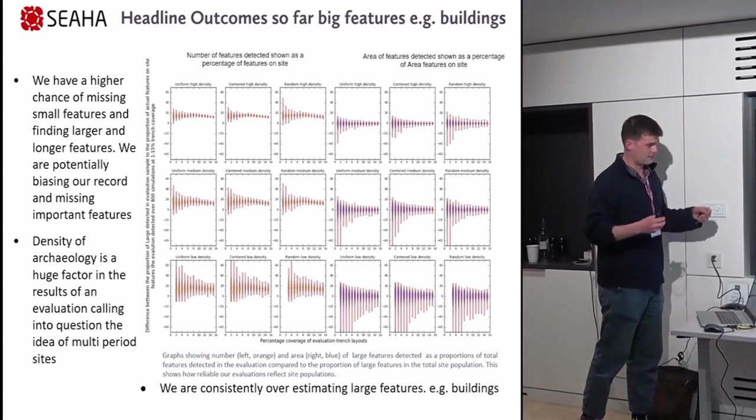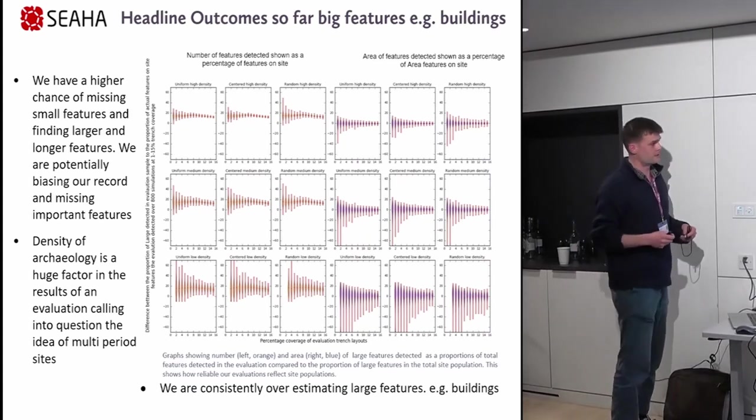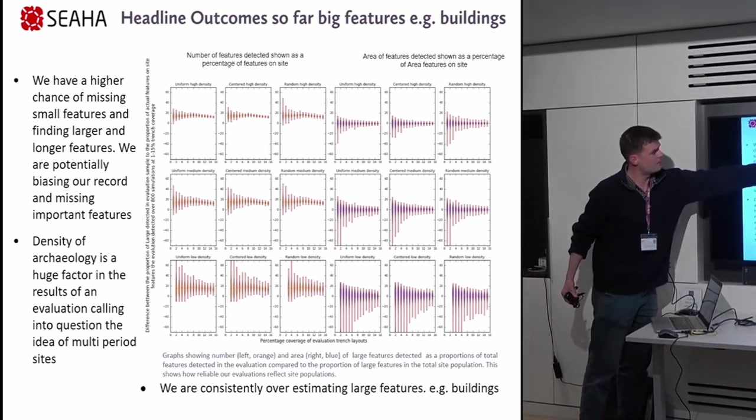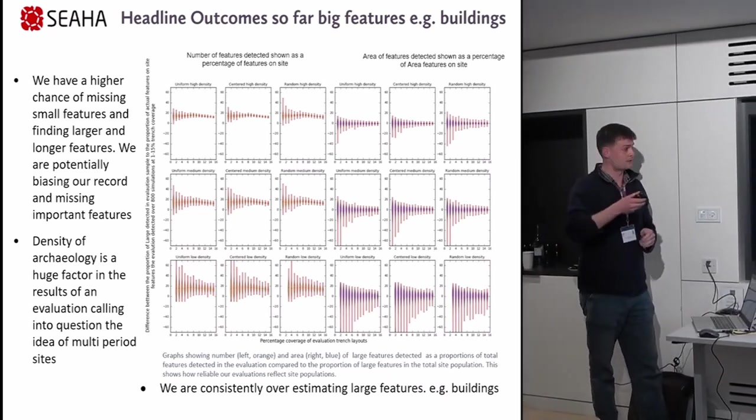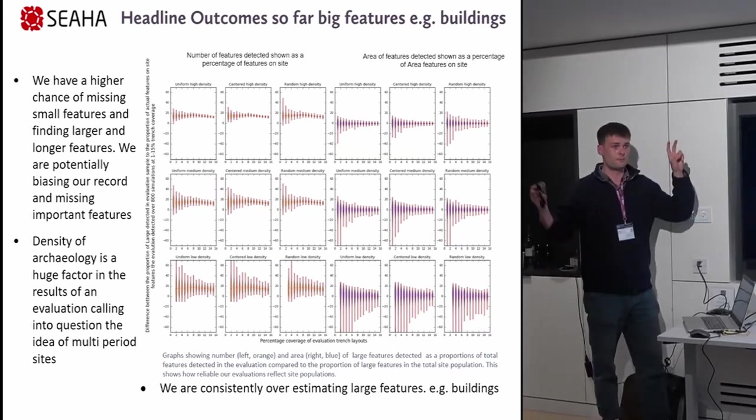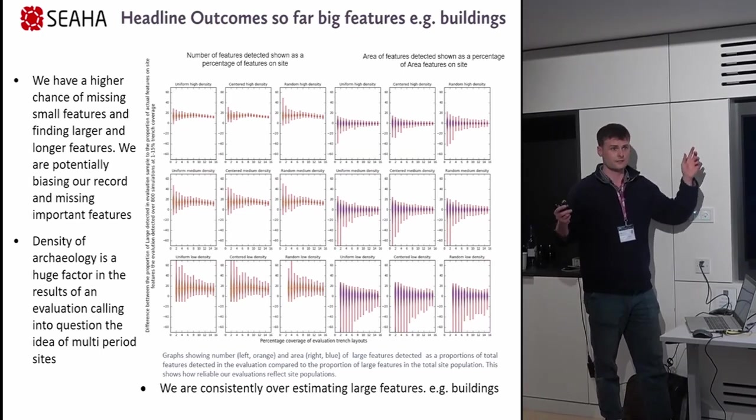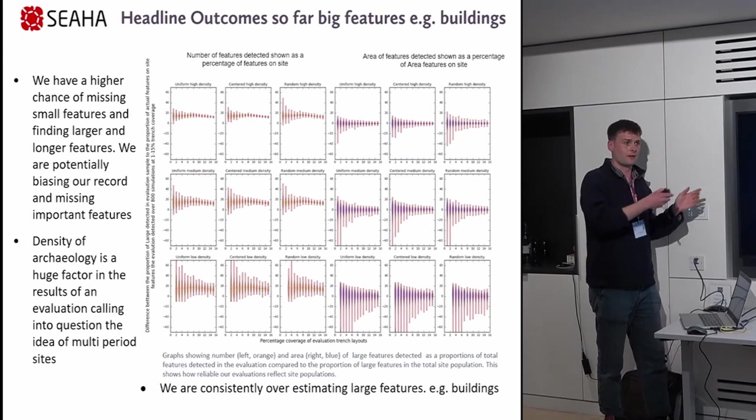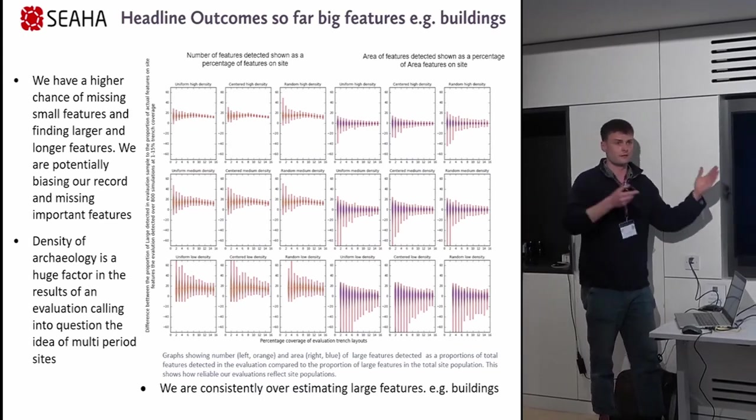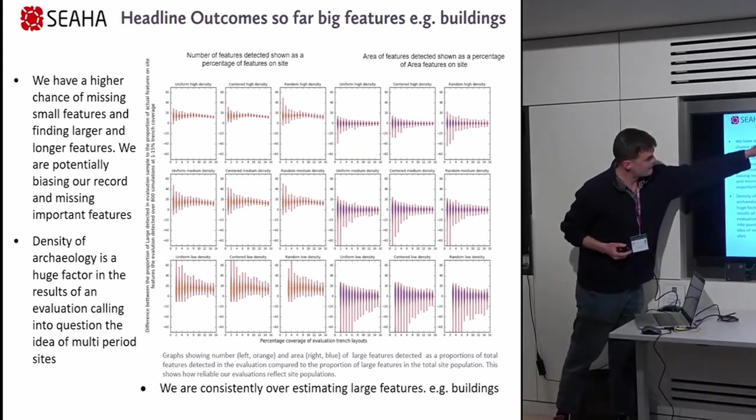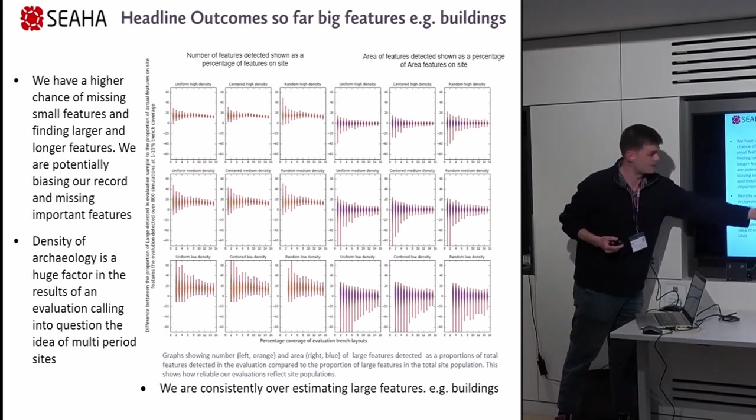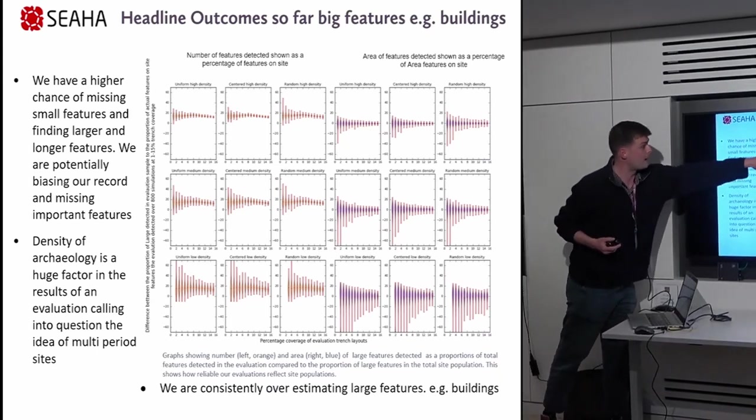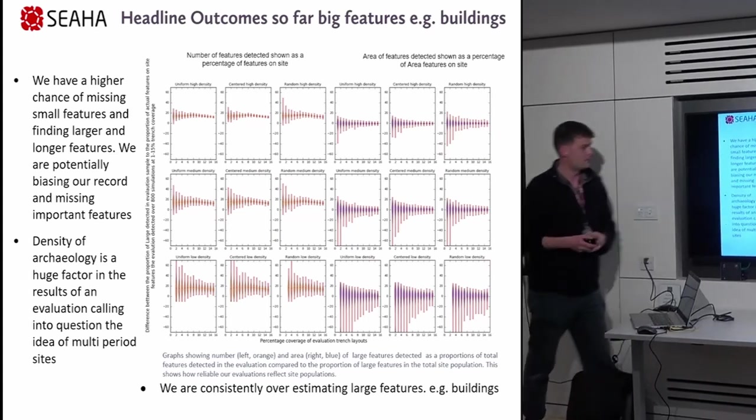Another taste of the results is looking at the size of the features. To explain these graphs, these bars are presented as the rate compared to the ratio of the actual features on site. So the archaeological population of the site, let's say a third was the large features. In the evaluation, it's how much percentage were your large features in the evaluation. So how much is your trenching showing the population of your site? Here we see that the numbers of your large features are over-represented, but actually the area, though you do have a huge amount of variation, is perhaps a better indication, though you do get a huge amount of variations at low amounts of trenching.